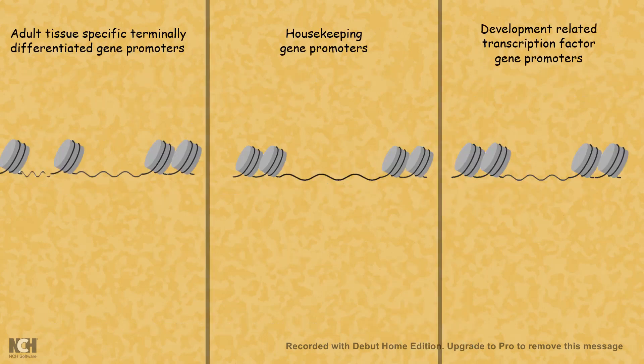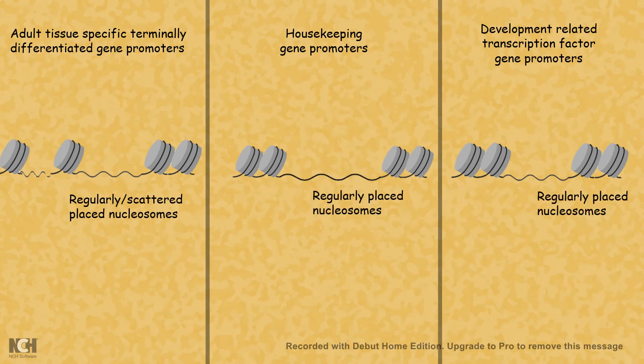Tissues that are adult or terminally differentiating have promoters with irregularly or scattered-placed nucleosomes, whereas housekeeping and developmental gene promoters have mostly regularly spaced nucleosomes. So in terms of nucleosome organization, these promoters are very different.